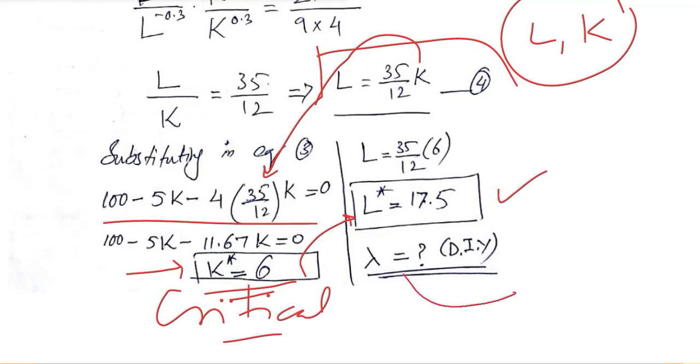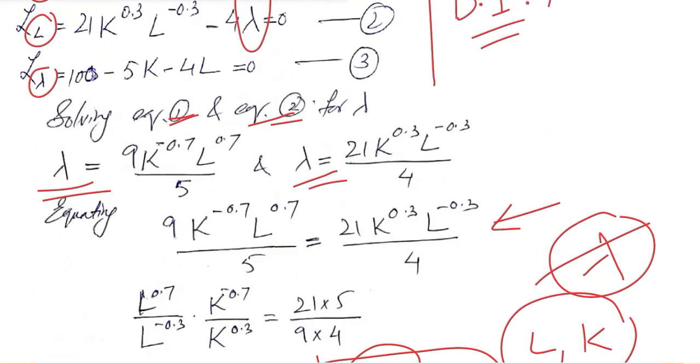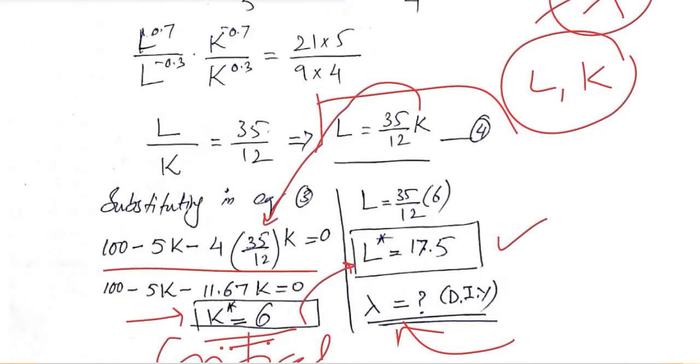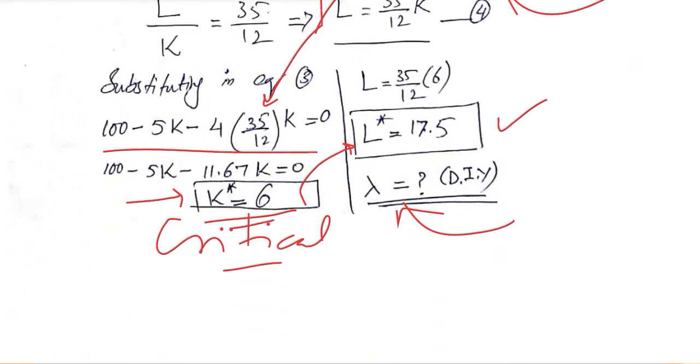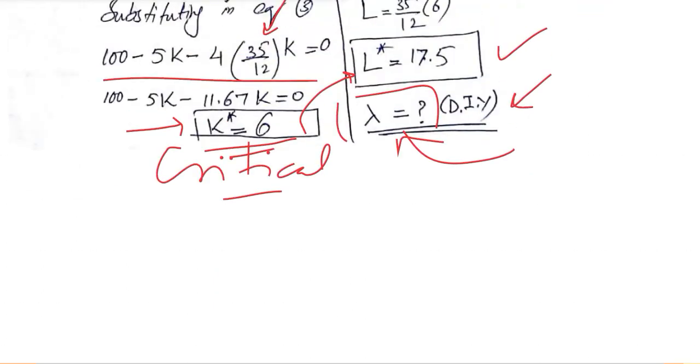And for lambda, you have to do it yourself because you have the values. Both of them are going to give you the same result but you have two formulas by using which you can find the value of lambda. So DIY, you can do it yourself and see what is the answer and you can also try to interpret it.